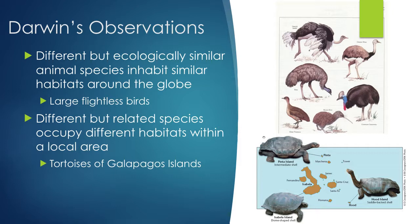One thing Darwin noticed on different continents was that there were different but ecologically similar animal species inhabiting similar habitats around the globe. On different continents he saw different species of birds that were similar but still very different. They were large flightless birds — for example, in the southern hemisphere there are emus, ostriches, and a bird in South America called the Rhea. They are large flightless birds, very similar but also very different because of their different habitats.